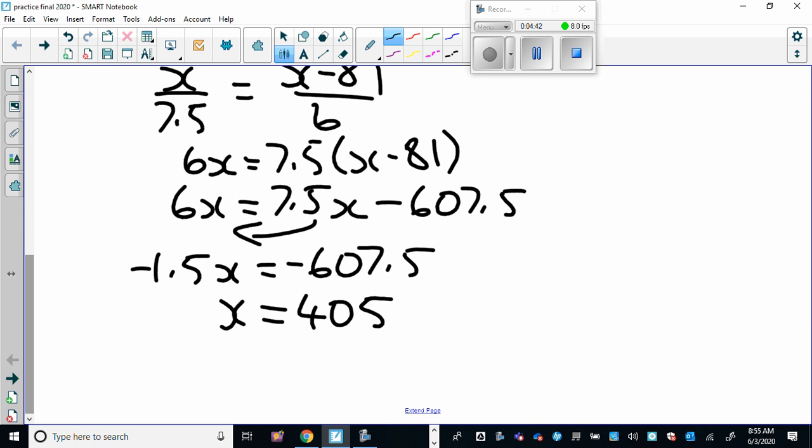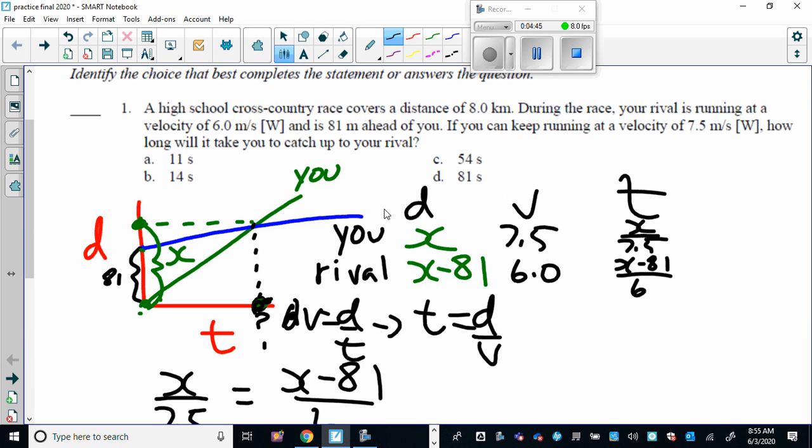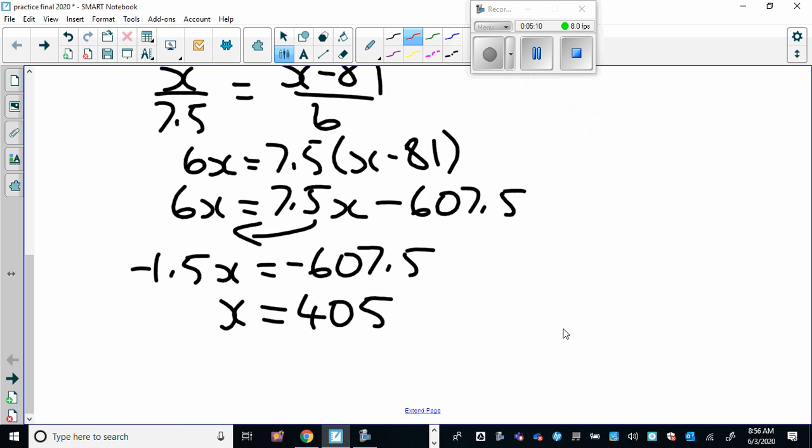Move that over this side, and then divide, and you end up getting x equals 405. Then you have to ask yourself, what does x represent? X represents the distance that you traveled. So the distance your rival traveled is going to be 405 minus 81. But the question is asking for how long will it take you. To find that out, you can just plug it into either one of those because that represents the time. So we're just going to go 405 divided by 7.5, and that's going to give you the answer of 54 seconds.